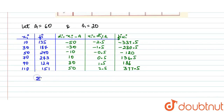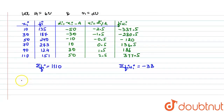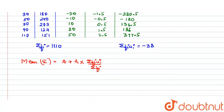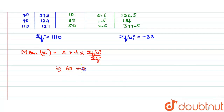We now calculate two summations: the summation of fi comes out to be 1110, and the summation of fi·ui comes out to be −38. The formula for mean using the step deviation method is: x̄ = a + h × (Σfi·ui / Σfi). Substituting: a = 60, h = 20, Σfi·ui = −38, and Σfi = 1110.